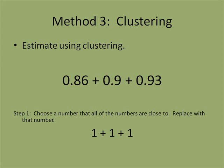The first thing that I'm going to do is choose a number that all three of those numbers are pretty close to. In this case, they're all very close to 1. So I'm just going to change each of the numbers to 1.